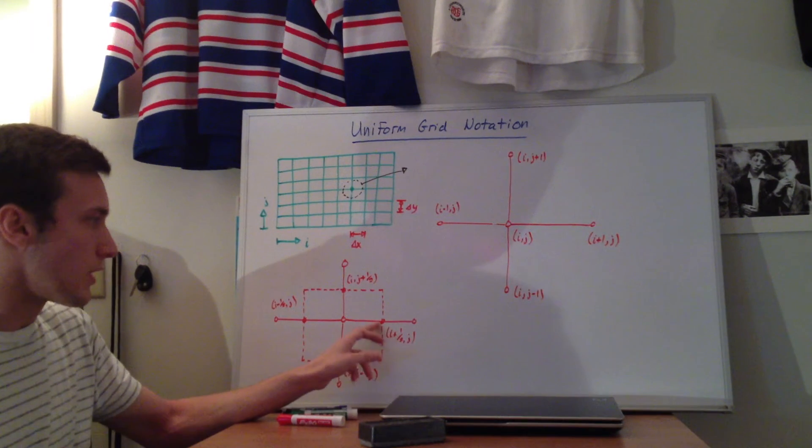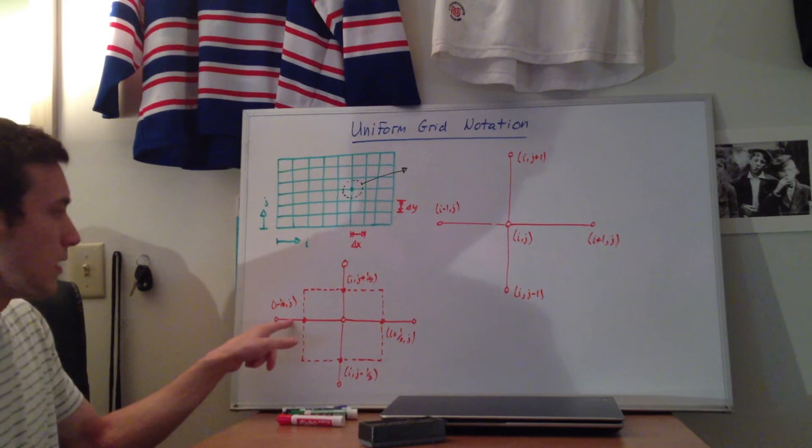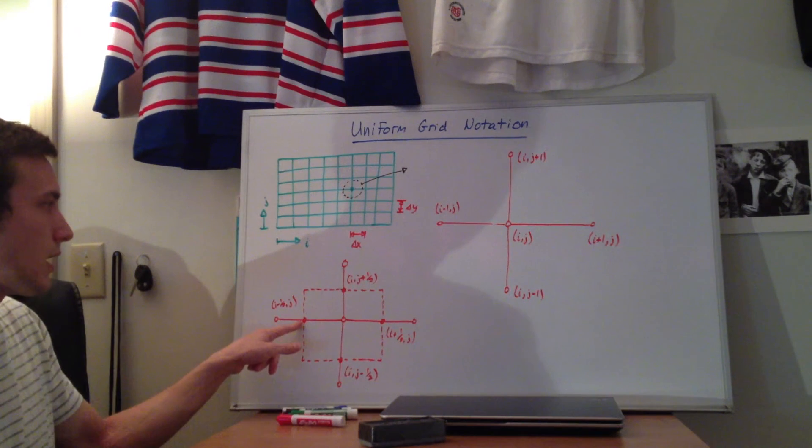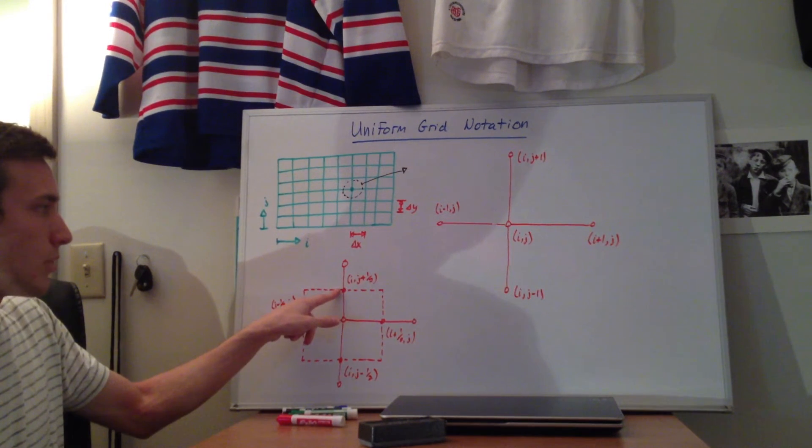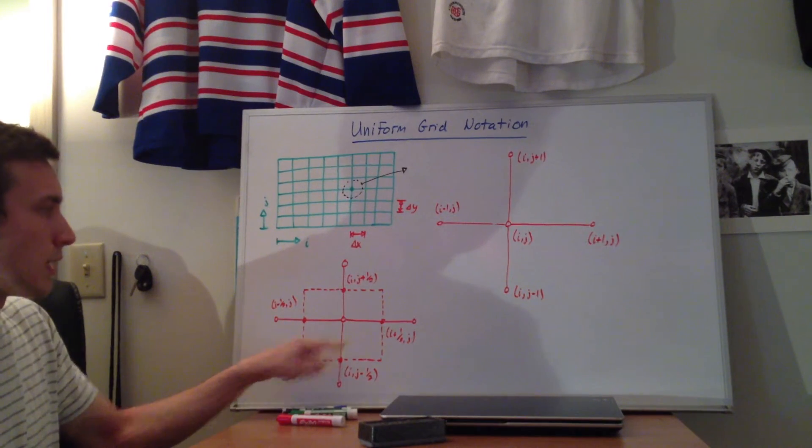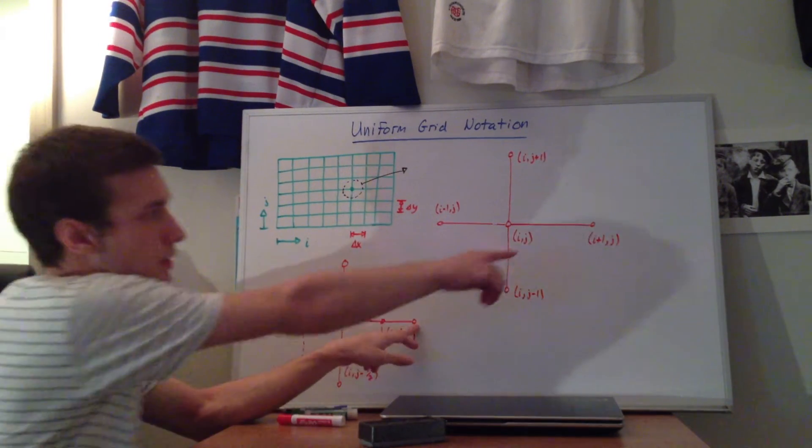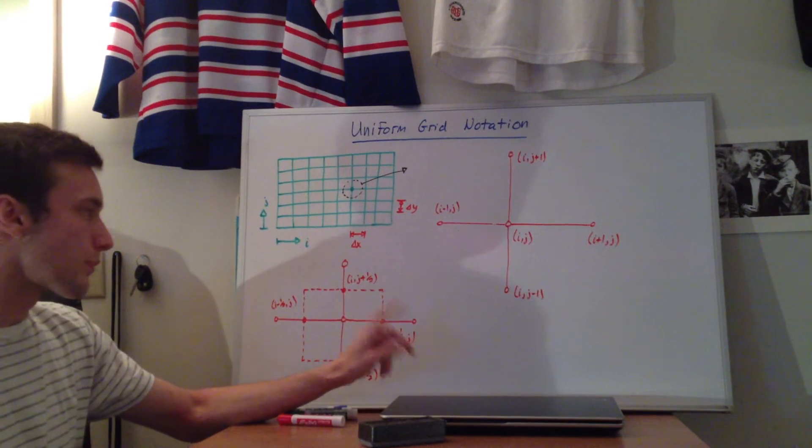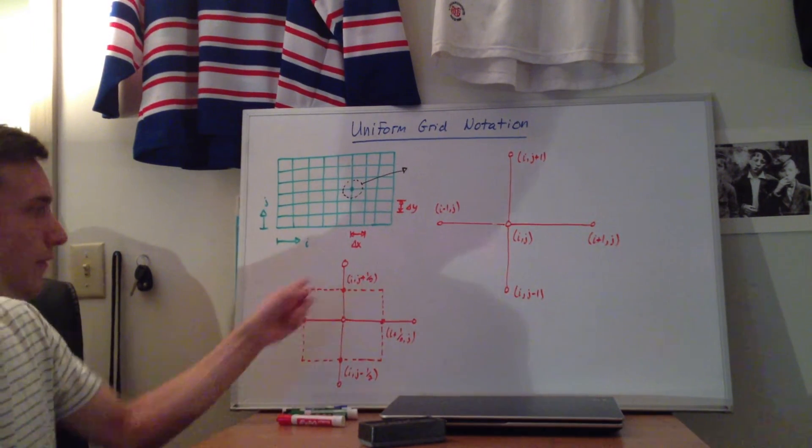It'll be called i plus 1.5 j, back here, moving back one will be i minus 1.5 j, up i j plus 1.5, and then down i j minus 1.5. This point here is the same as that one, which is i plus 1 j. So we call it half node stuff.